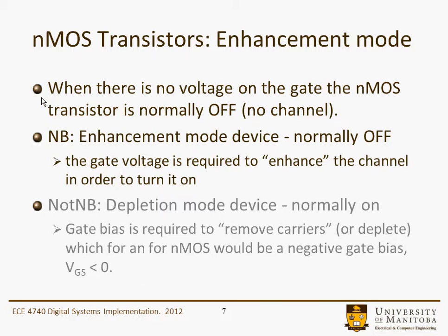When there's no voltage on the gate, the NMOS transistor is normally off — no channel. For an enhancement mode device, that's what it means when it says normally off: a gate voltage is required to enhance the channel or turn it on. You need to apply a gate voltage to turn it on — that's why it's called an enhancement type device.